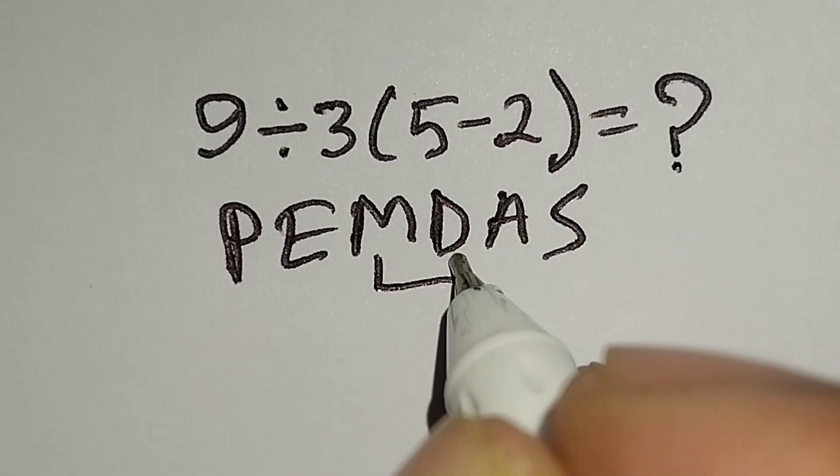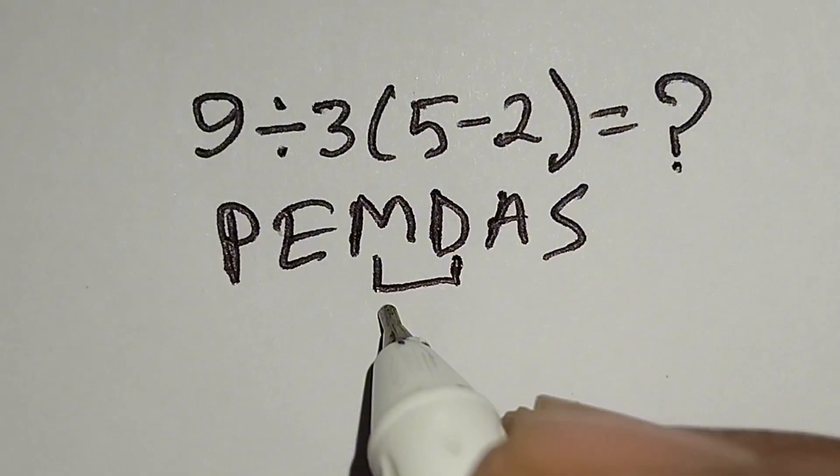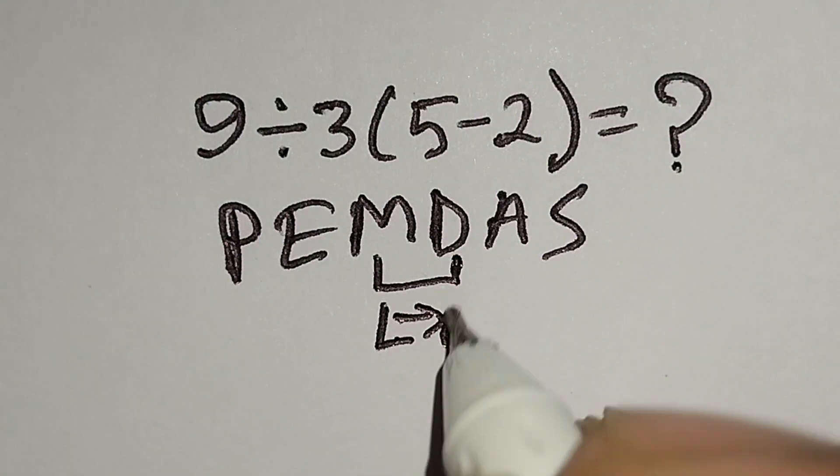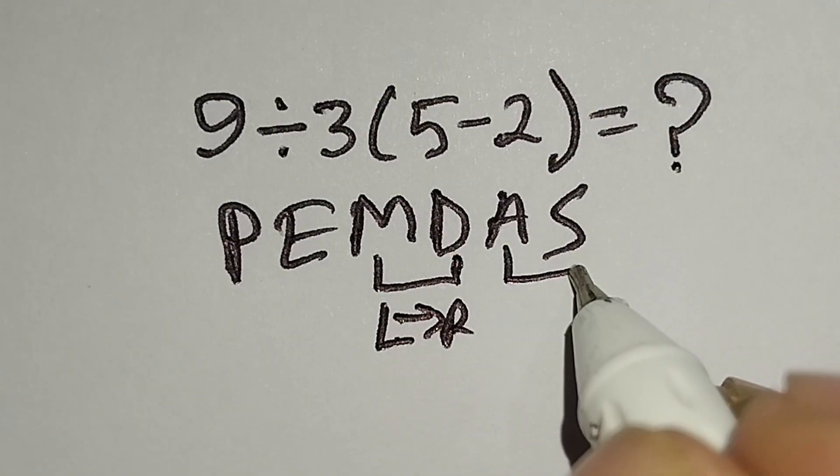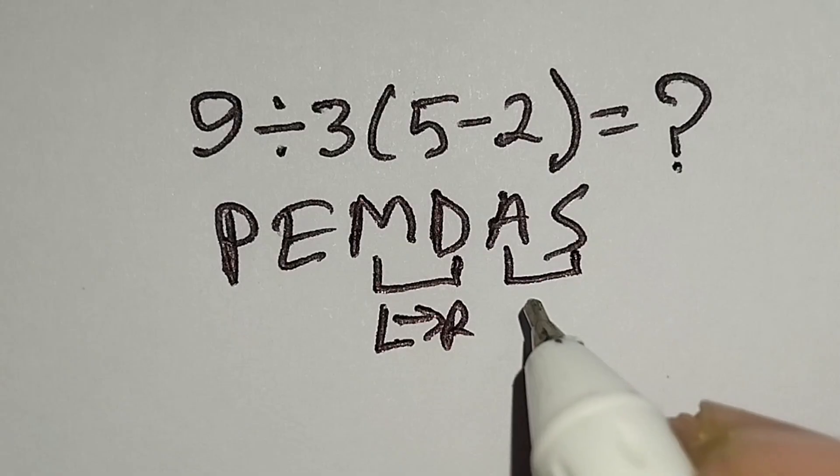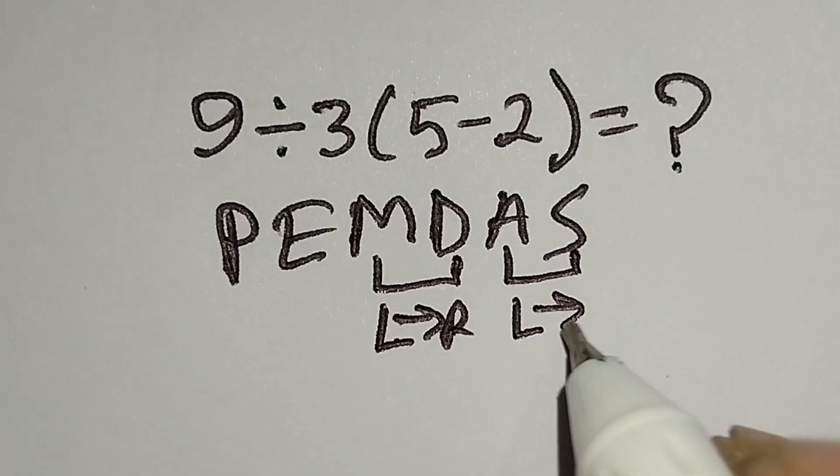Remember, multiplication and division have same priority, so we have to work left to right. And addition and subtraction have same priority, so we have to work left to right also.